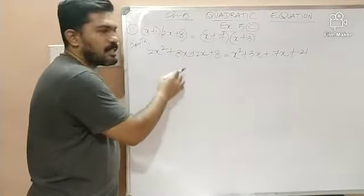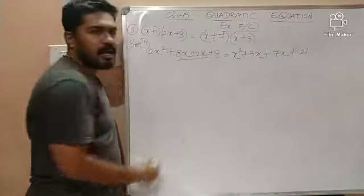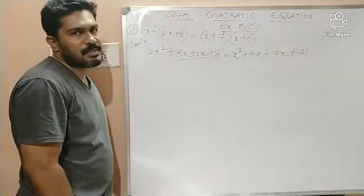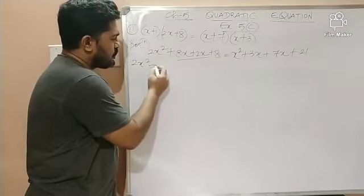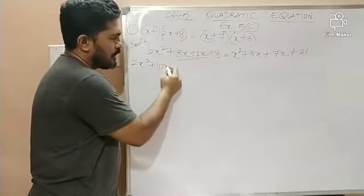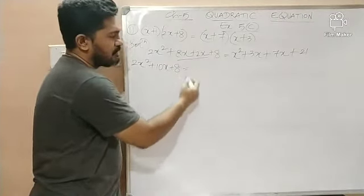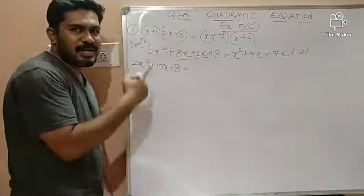So children, the left hand side if you see, we have 8x plus 2x. What is 8x plus 2x? 10x. So I can rewrite this as 2x²+10x+8 which is equal to and on the right hand side,